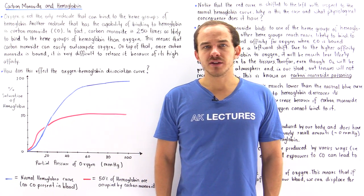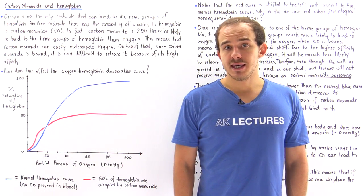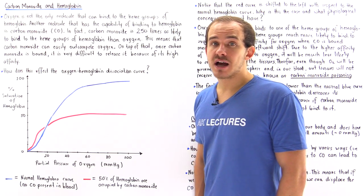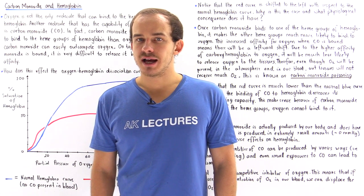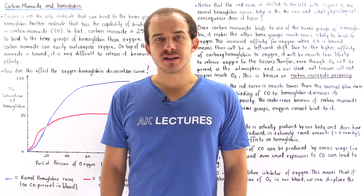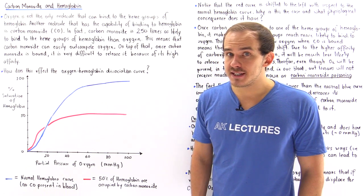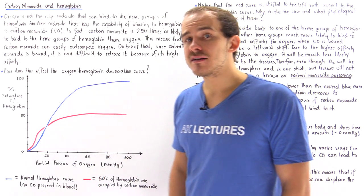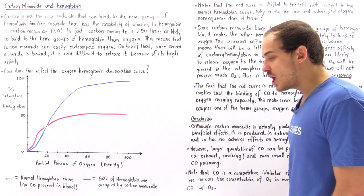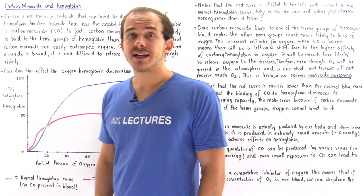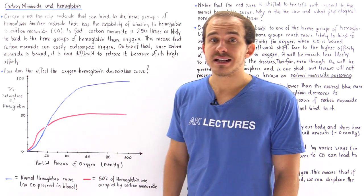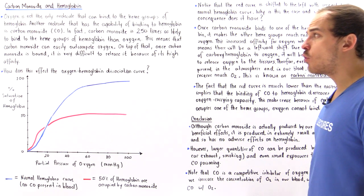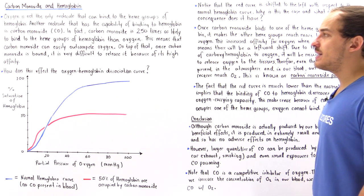Oxygen is not the only molecule that can bind onto the heme group of hemoglobin. Another molecule that can bind to the same exact group is carbon monoxide. In fact, carbon monoxide is about 250 times as likely to actually bind to hemoglobin than oxygen. So when we have oxygen, carbon monoxide, and hemoglobin present in the same mixture, carbon monoxide will have no problem outcompeting the oxygen for that heme group.